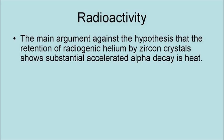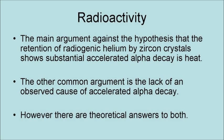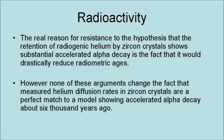The main argument against the hypothesis that the retention of radiogenic helium by zircon crystals shows substantial alpha decay is heat. The other common argument is the lack of an observed cause of accelerated alpha decay. However, there are theoretical answers to both. The real reason for resistance to this hypothesis is that it would drastically reduce radiometric ages. Nevertheless, none of these arguments change the fact that measured helium diffusion rates in zircon crystals are a perfect match to a model showing accelerated alpha decay about 6,000 years ago.